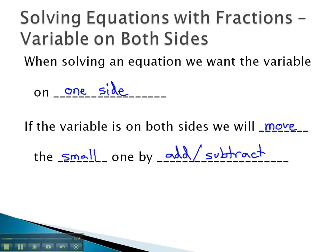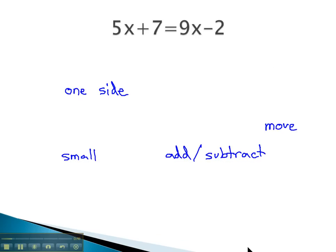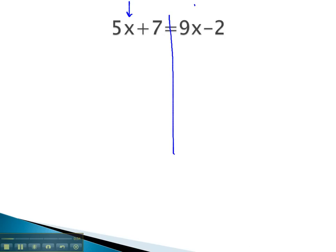Let's take a look at an example where we do just that. In this problem, we see the variable is on both sides of the equal sign. We need to have it on only one side, so we're going to move the smaller one to the other side by either adding or subtracting.